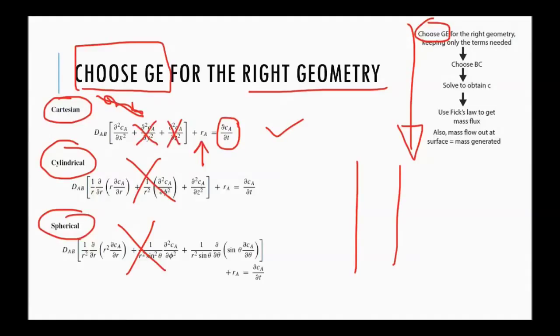So that becomes my governing equation. And we can simply write it as d del square ca del x square plus ra equal to 0. Much simpler than what you see over here.